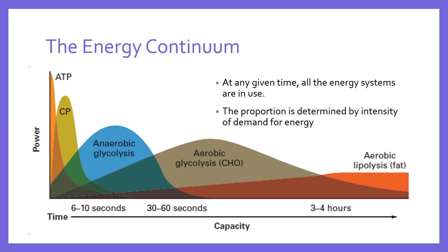So what you can see is there is some overlap, and that's the key thing about the energy continuum. There is overlap between the systems. It's not simply that ATP is used up in the first few seconds, then the ATP-PC system kicks in for 10 seconds or so, then it's anaerobic glycolysis for the lactate system. No — they actually overlap. It's just the proportion of energy provided by each system that changes, and as you can see, depending on the time frame or the intensity, that will determine which system is predominantly producing the energy required.